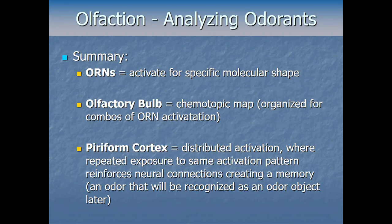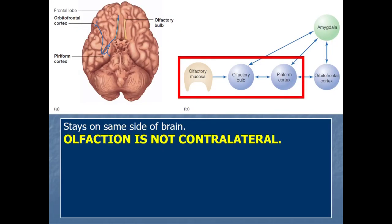To summarize: ORNs are our smell detectors, activating for specific molecular shapes, with about 350 different types giving a huge number of possible combinations. Signals enter the brain at the olfactory bulb, where chemotopic mapping organizes combinations of ORN activation. Then signals reach the piriform cortex, which has distributed activation — repeated exposure reinforces neural connections, following the principle that cells that fire together wire together, creating a memory and an odor object like 'coffee smell' or 'bacon smell.'